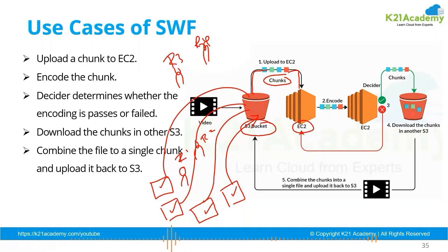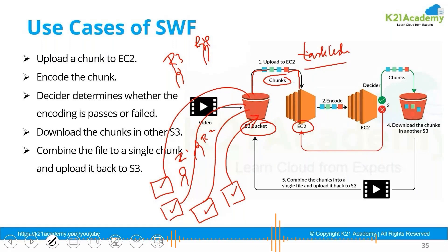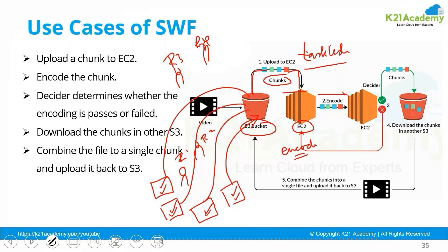This S3 bucket will upload the chunks, which have been uploaded by the reporters, to an EC2 instance. On this EC2 instance we have a workflow starter which has the task list of what actions are required. The first task is to encode the chunks uploaded by reporters into a format suitable for the news application to broadcast the stream. An activity worker encodes the small video chunks into the right format and forwards the encoded clips to the decider.